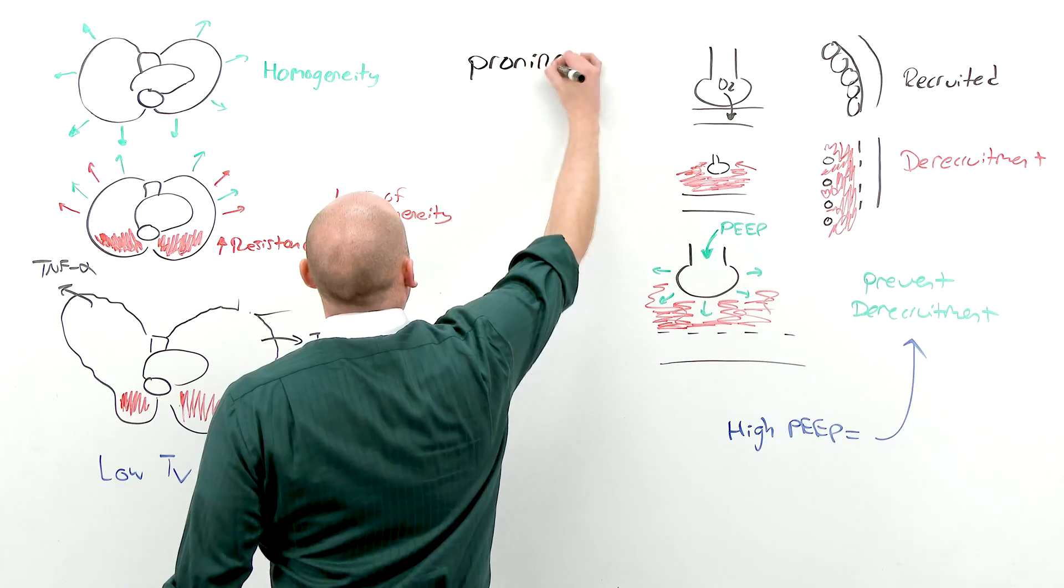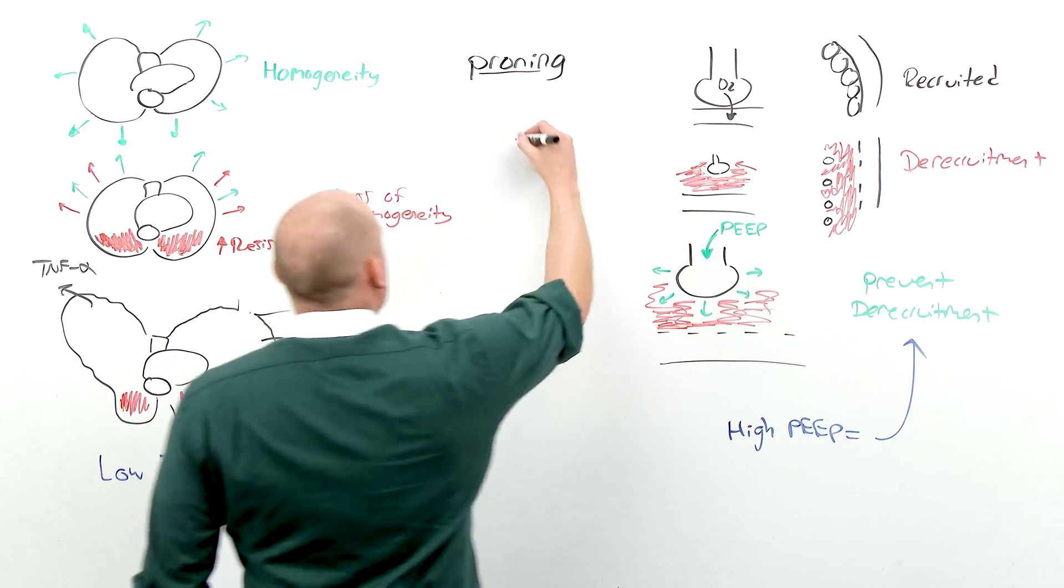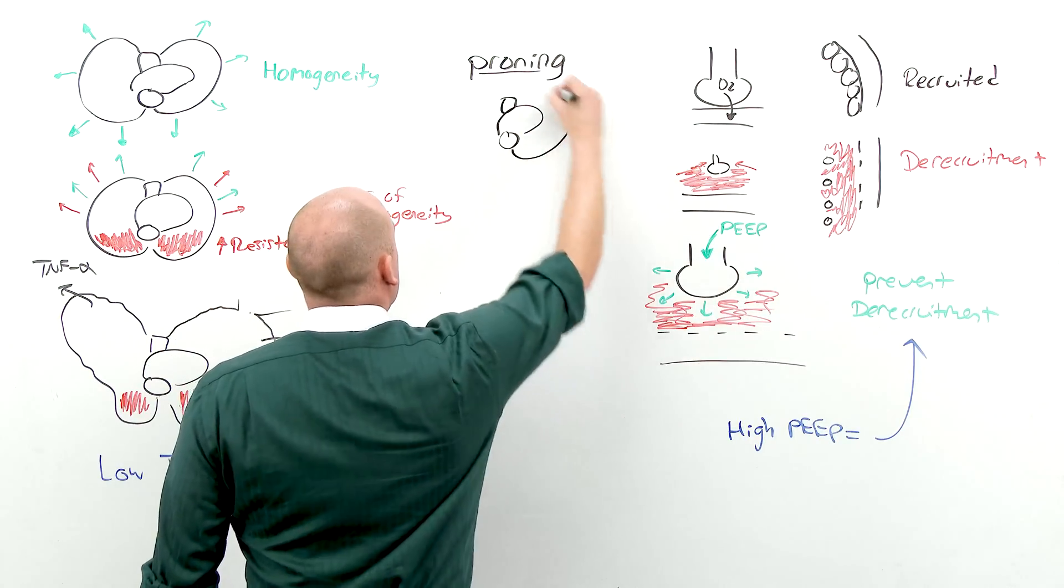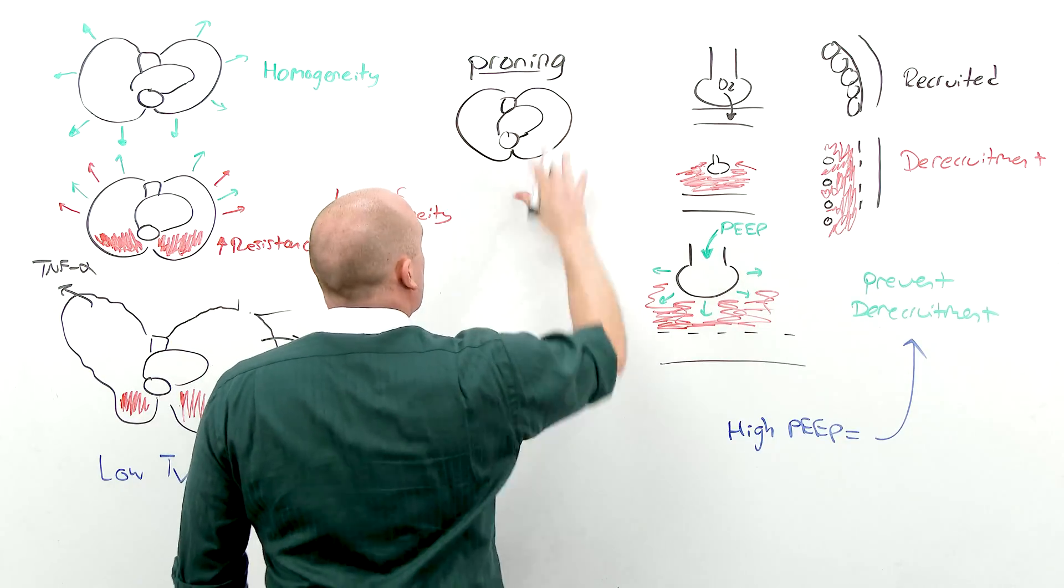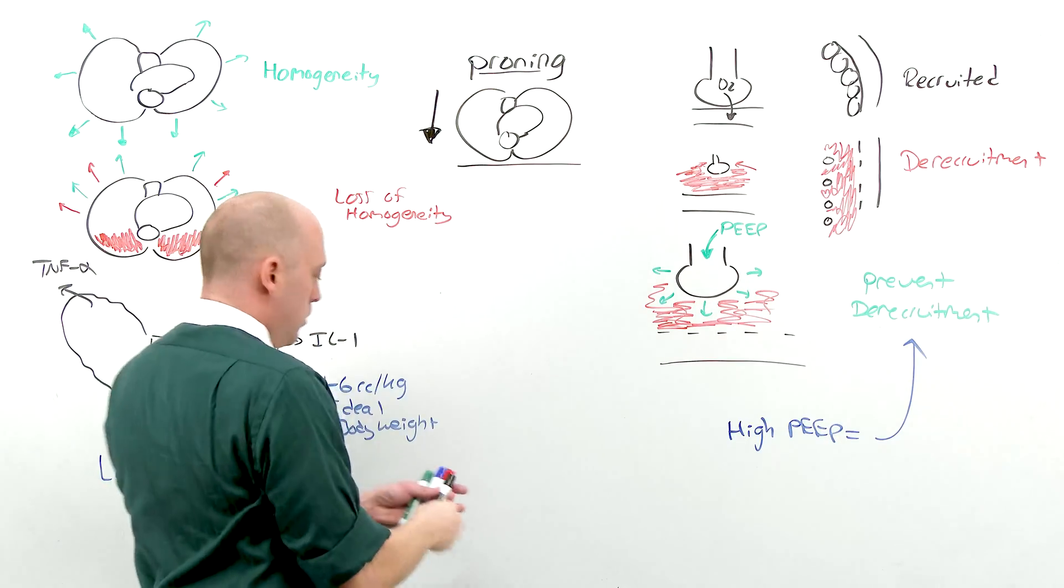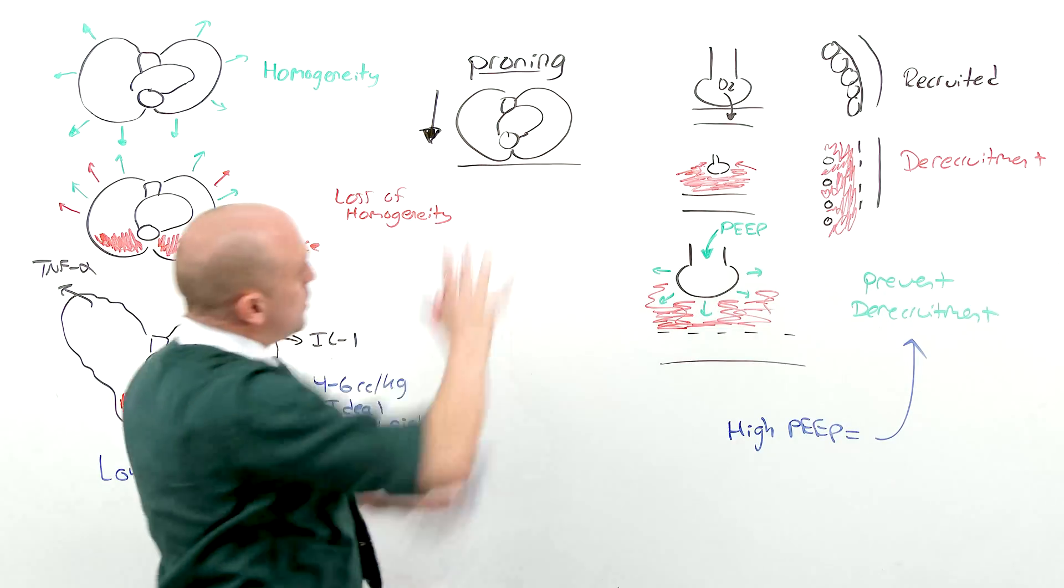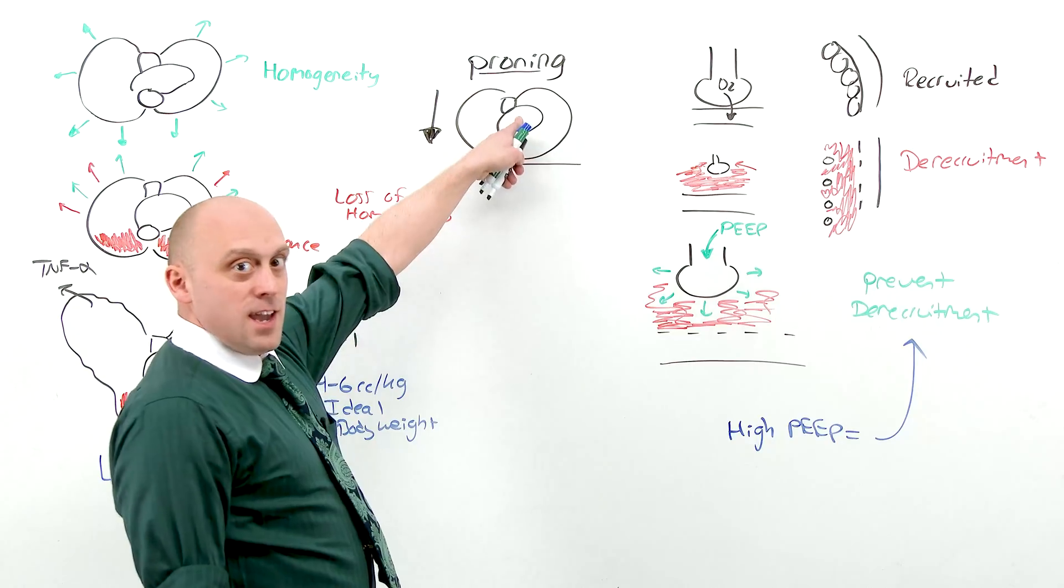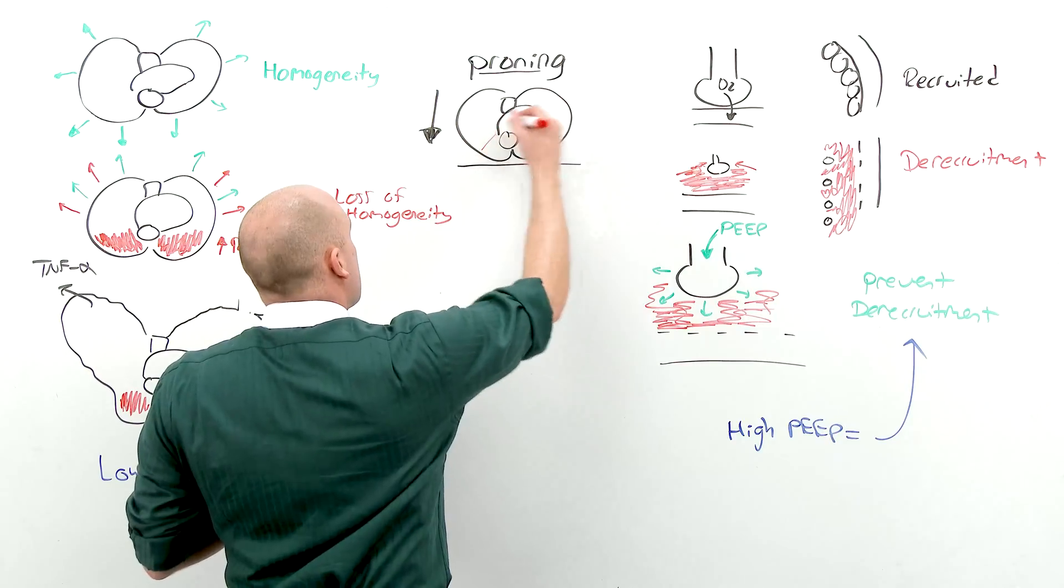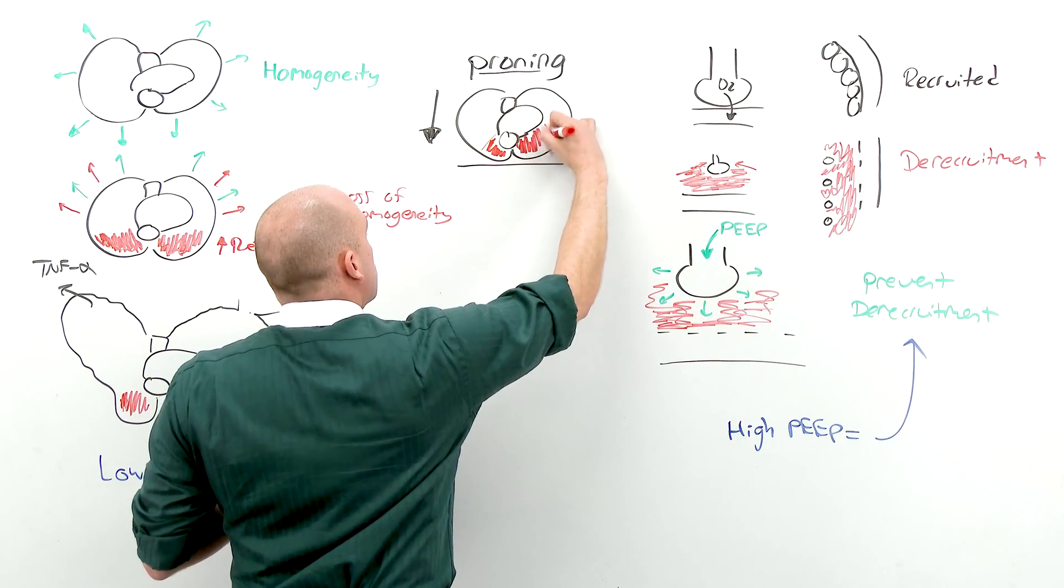Proning has been gaining favor. And I'll show you that it should not be used as a last ditch effort. Spine, heart, sternum, left lung, right lung. When you look at the patient on their back, the forces of gravity are pooling the fluid in the posterior. But there's something else that's happening. The heart has a mass and is pushing down on the lung underneath it. And in the supine position, there's lots of lung under the heart.